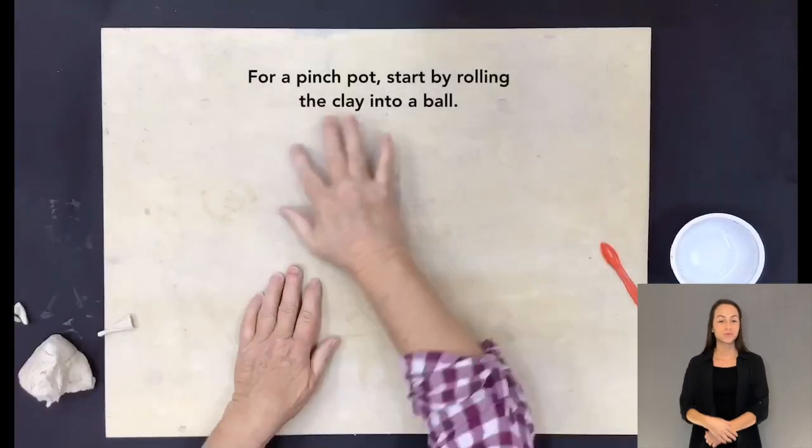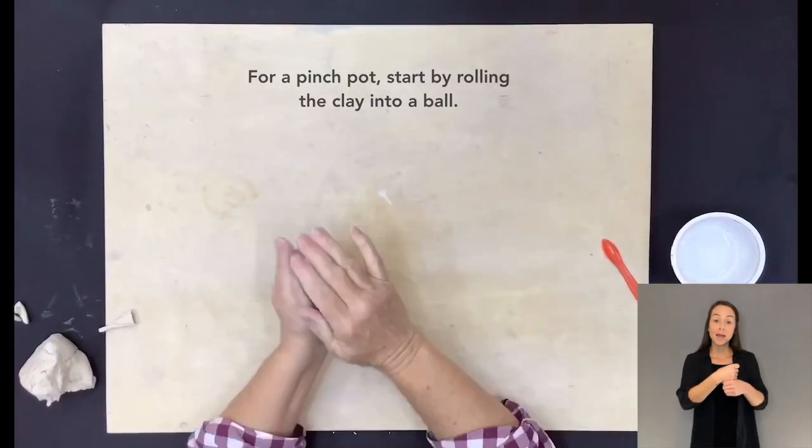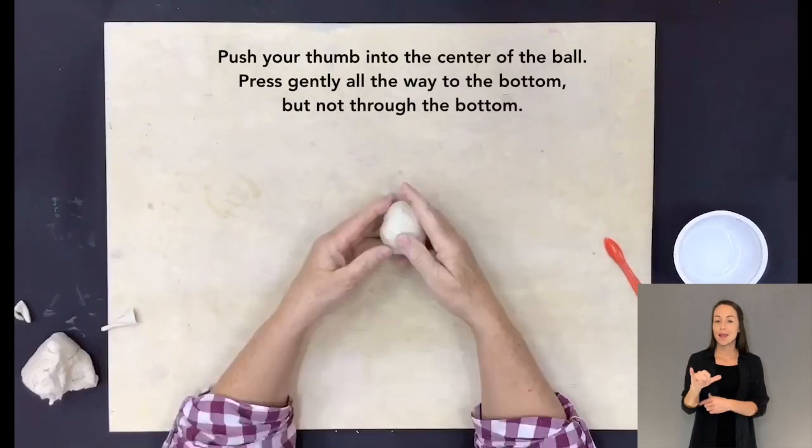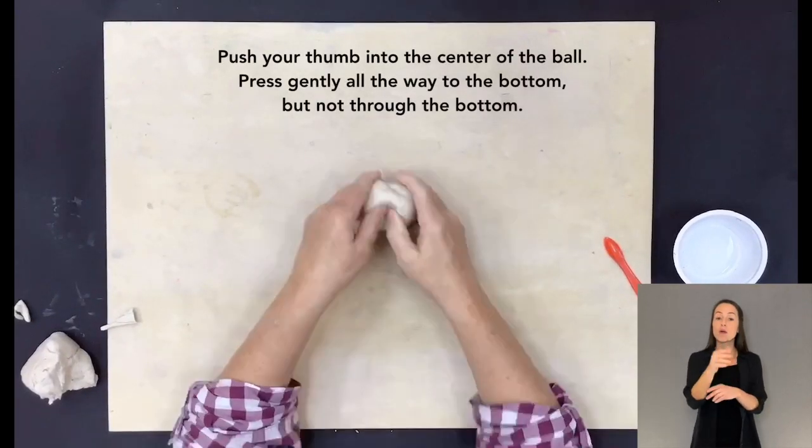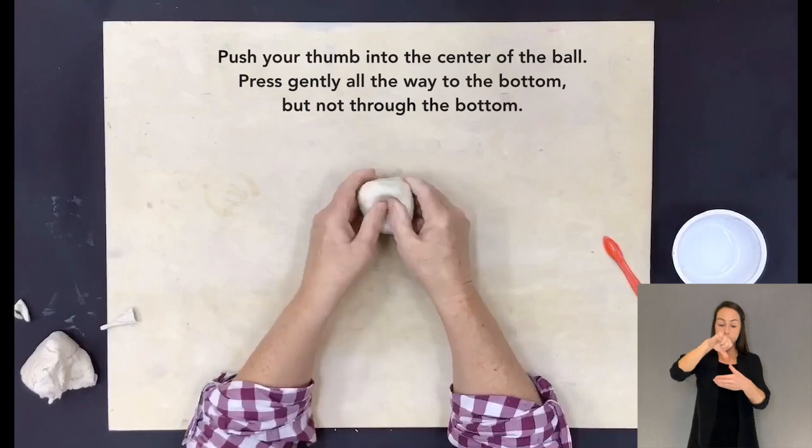For a pinch pot, start by rolling the clay into a ball. Push your thumb into the center of the ball. Press gently all the way to the bottom, but not through the bottom.